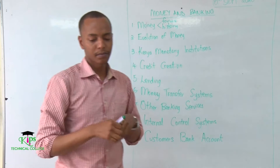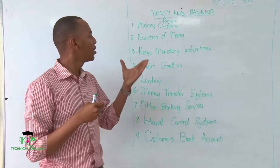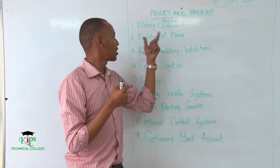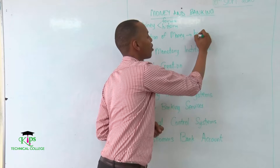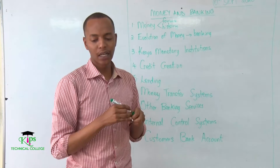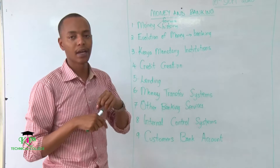After that, we'll move to our second topic: the evolution of money. How did money evolve? Money did not just appear overnight — it came through several steps. Under this topic we'll talk about the history of banking, because it is banking history that brought about money in society. We'll also cover the evolution of the banking system in Kenya.